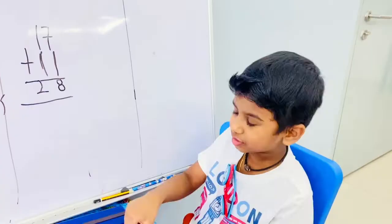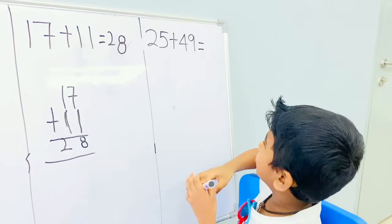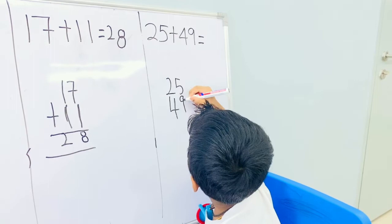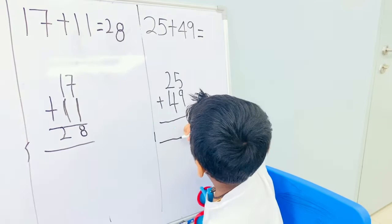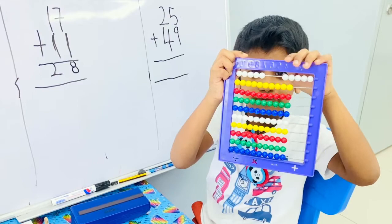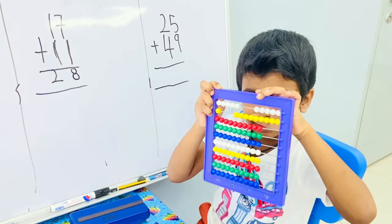Now let's go to the difficult one. 25 plus 49 equals to. So I have to take 5: 1, 2, 3, 4, 5. Then I add 9: 1, 2, 3, 4, 5, 6, 7, 8, 9, 10, 11, 12, 13, 14. So I have to write 14.